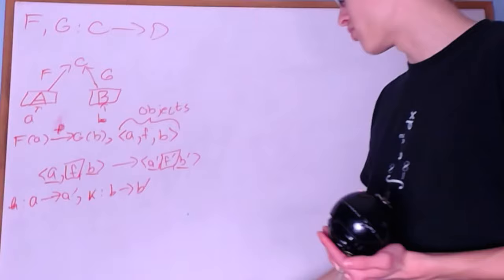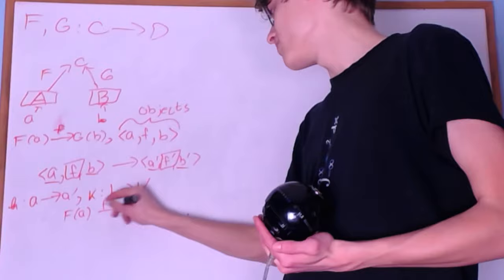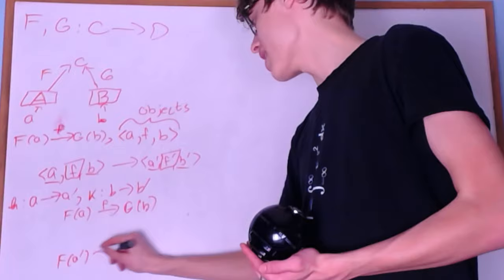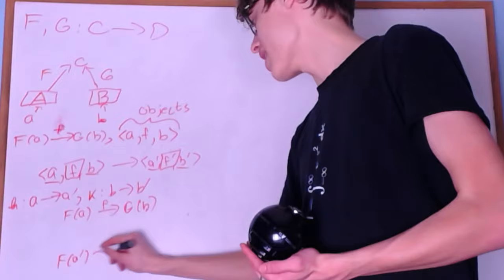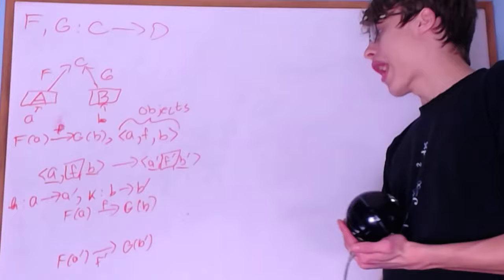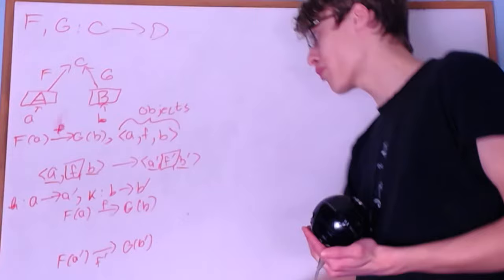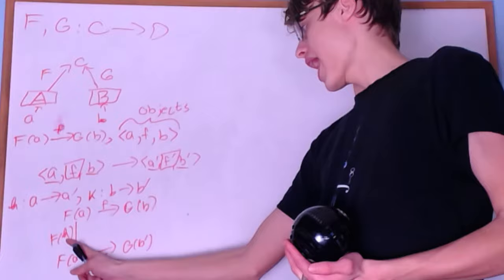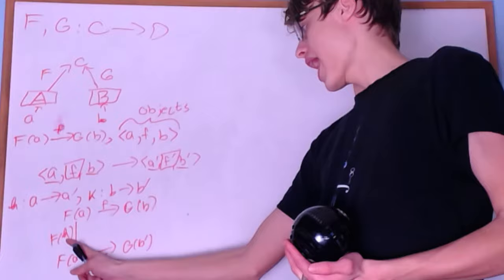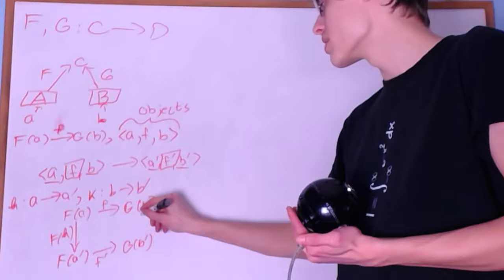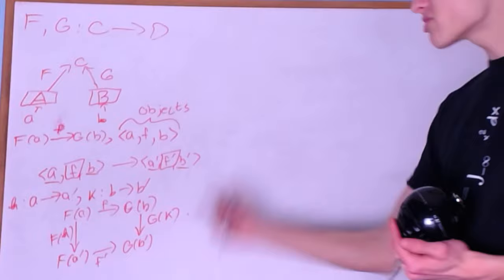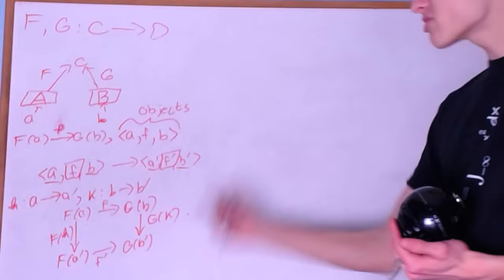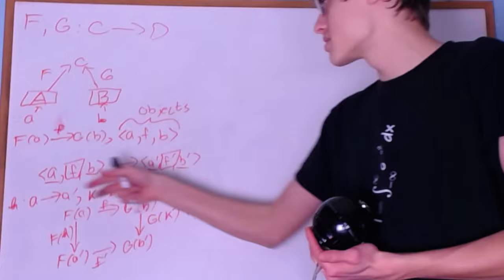We'd have F of A via f to G of B — that's the first triple. And for the second triple, we'd have F of A' via f' to G of B'. We have a morphism H from A to A', so I can apply F to get F of H between F of A and F of A'. And between G of B and G of B', I can do G of K. Because we want these arrows to be well-formed, this should be a commutative diagram.